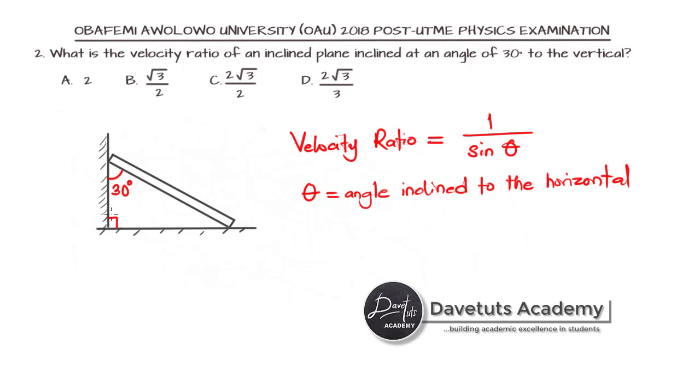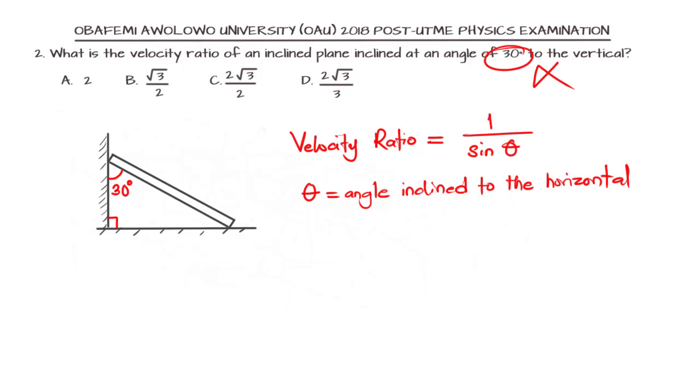We need to find what is the angle inclined to the horizontal. In the diagram, we are given 30 degrees to the vertical. If we use that, we are going to miss this question. To the horizontal, this angle being shown in blue is our theta.